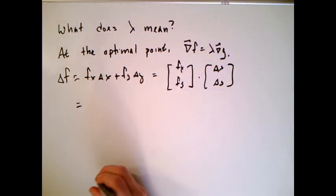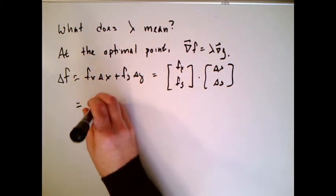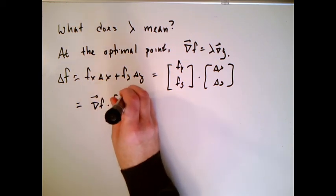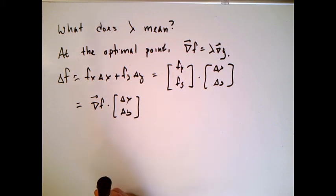Now, we don't really need the next step, but we're going to write it down this way anyways. This is the gradient of f dot delta x, delta y. And we're actually calculating the change at the optimal point.